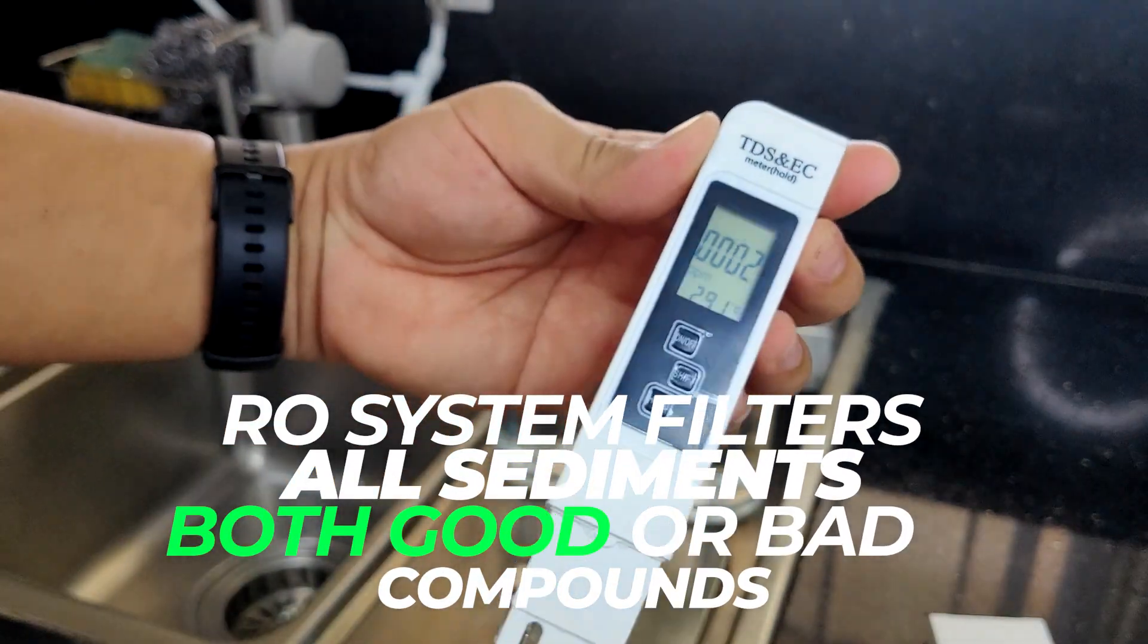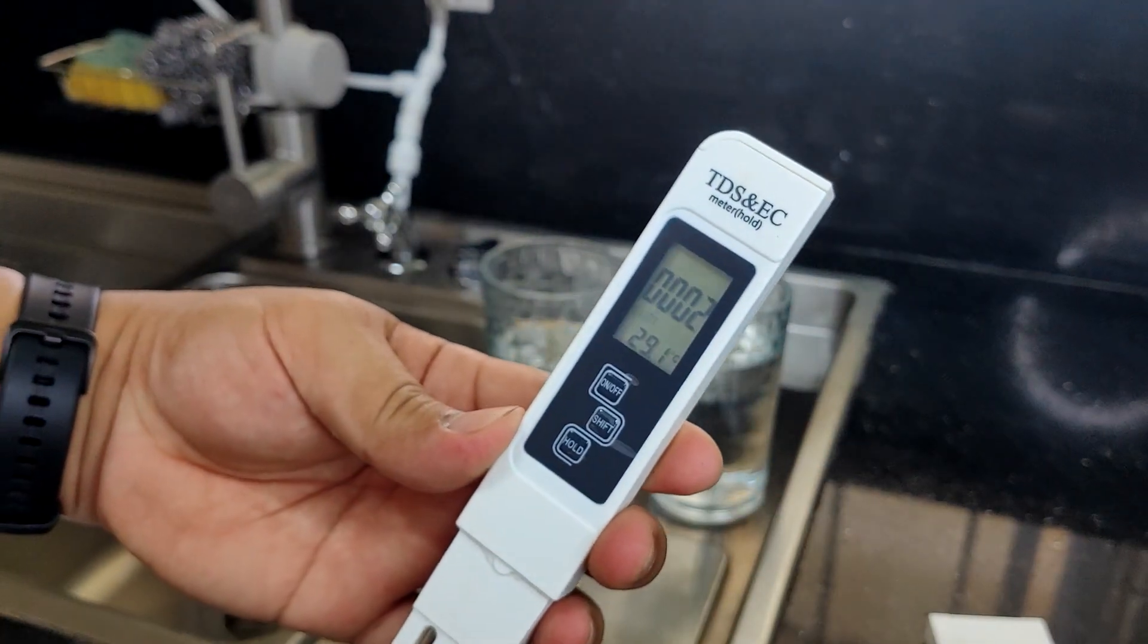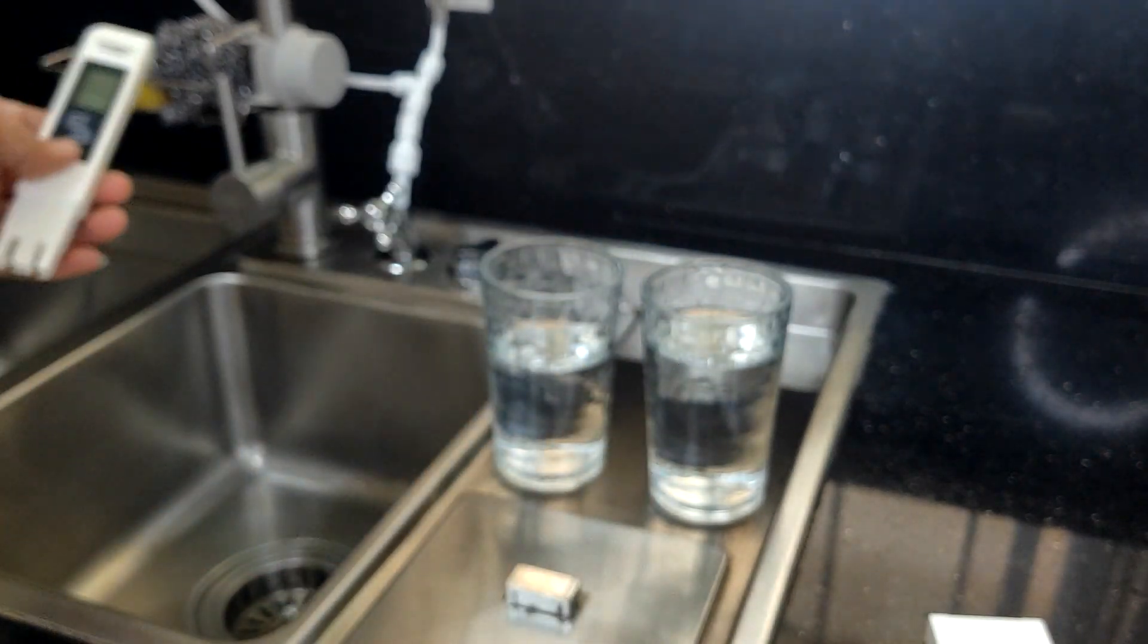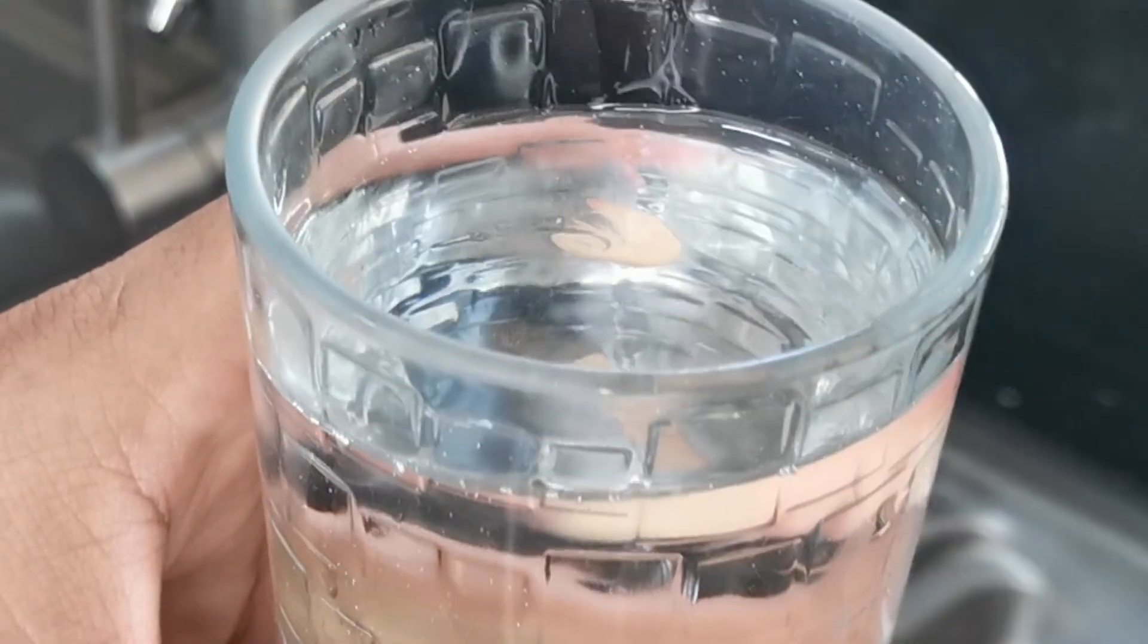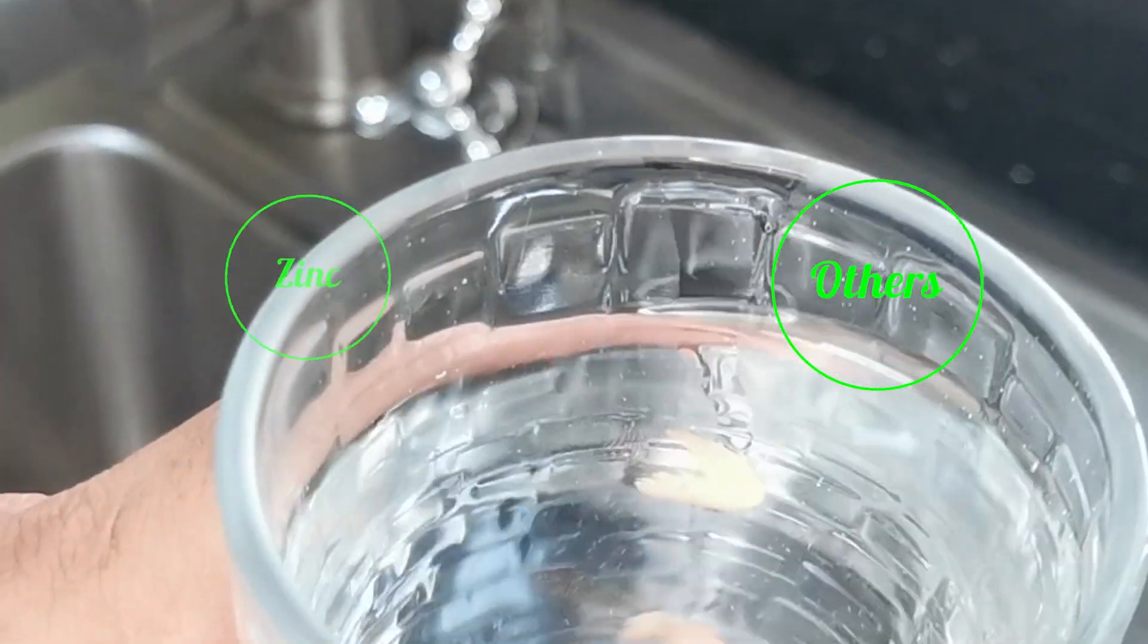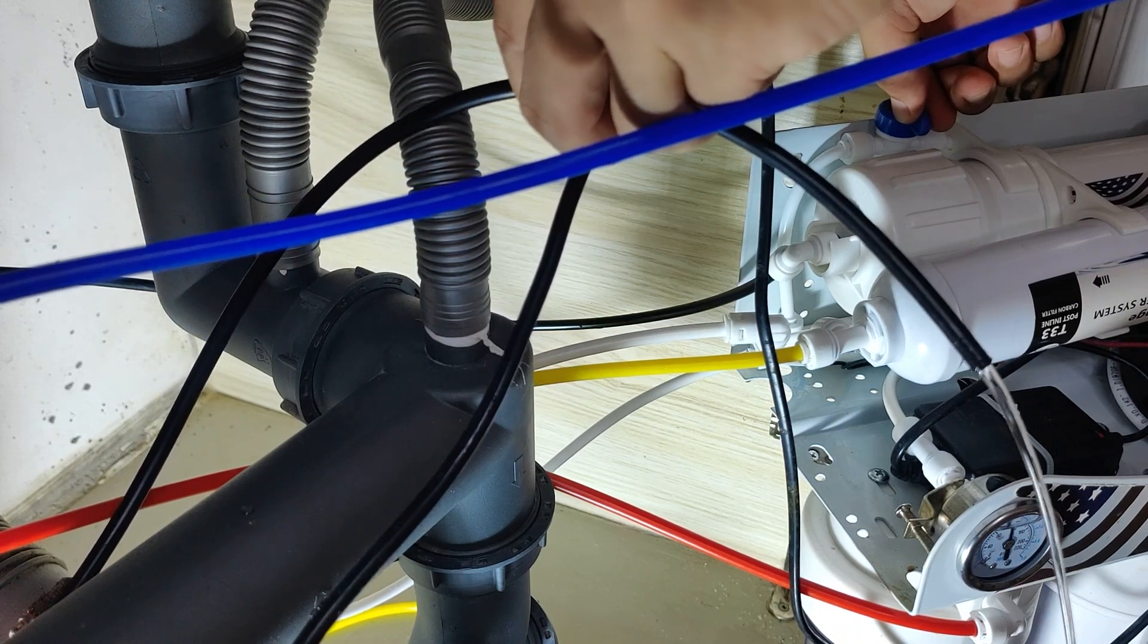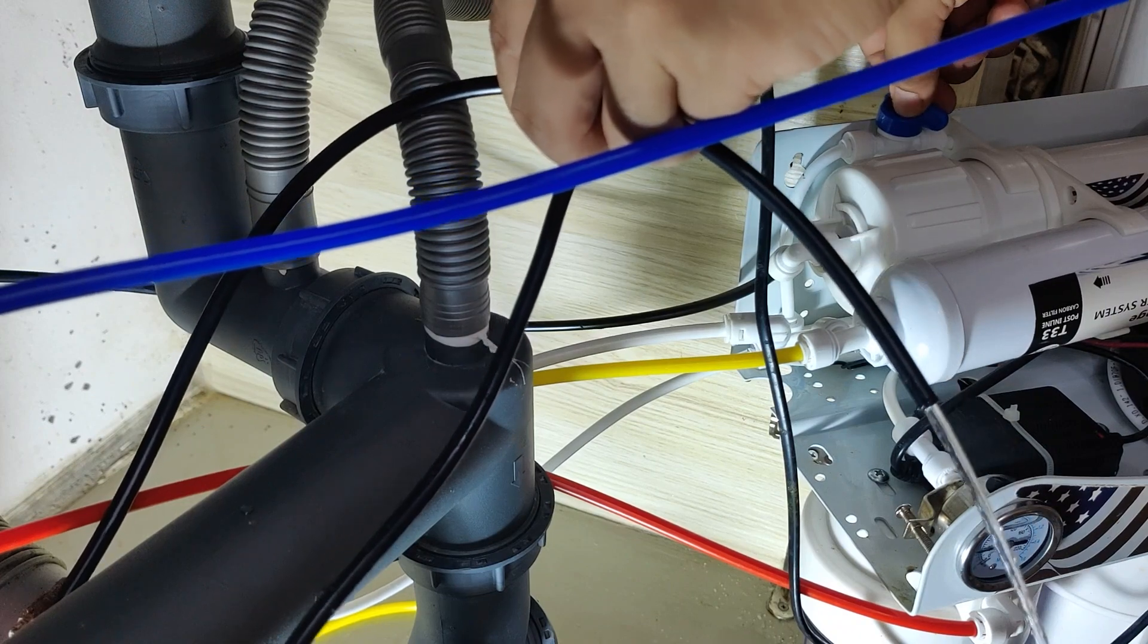RO systems filter your water of all compounds and sediments, including all the essential minerals such as calcium, magnesium, potassium and others that our body needs. That being said, this filtered water contains no minerals. It can potentially leach minerals from the body when it is consumed. This means that the minerals consumed in vitamins and food you eat may be urinated away. That is the reason why pure water is not good for the body.